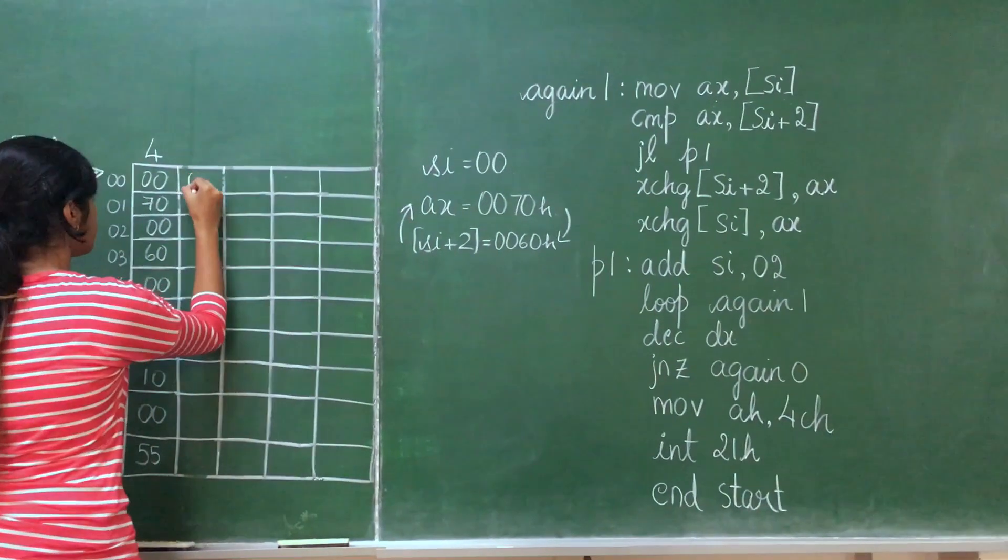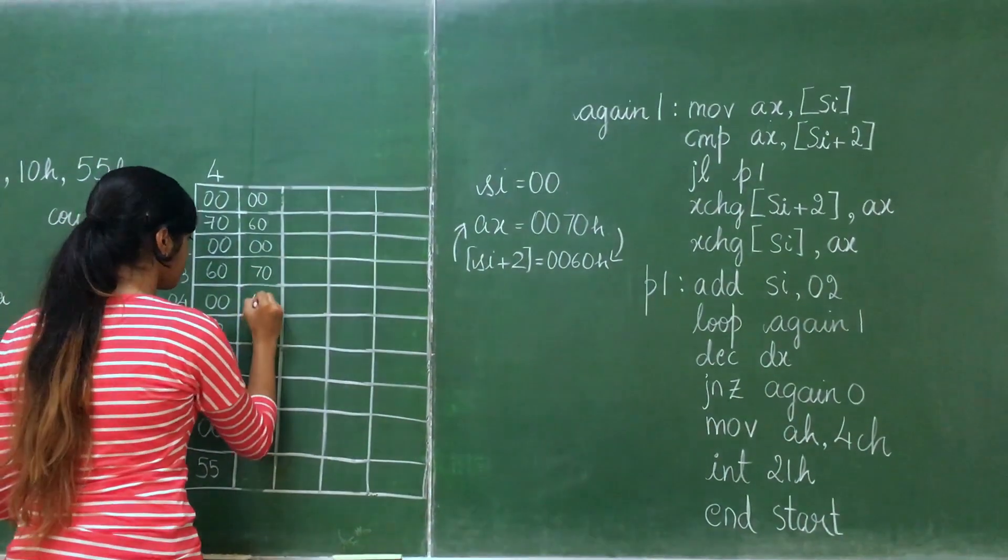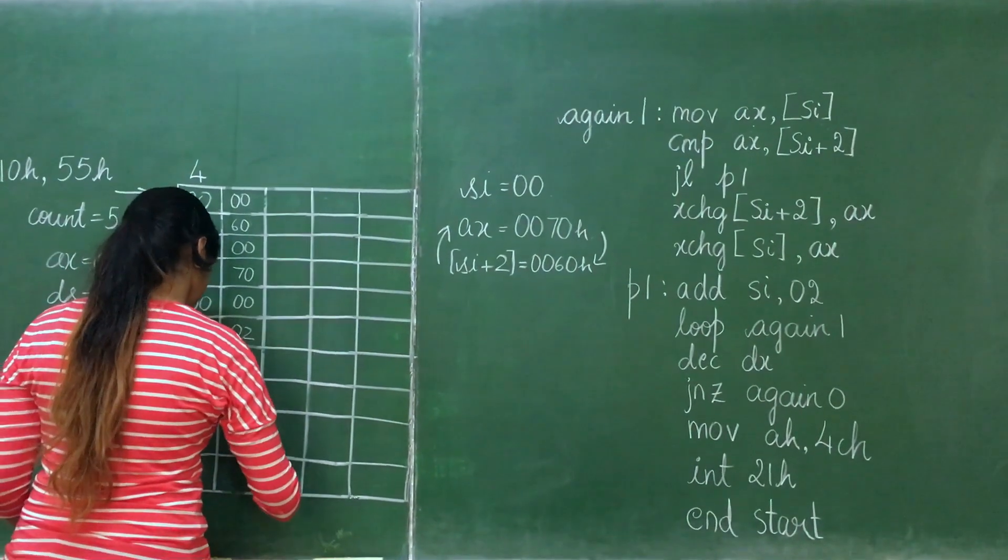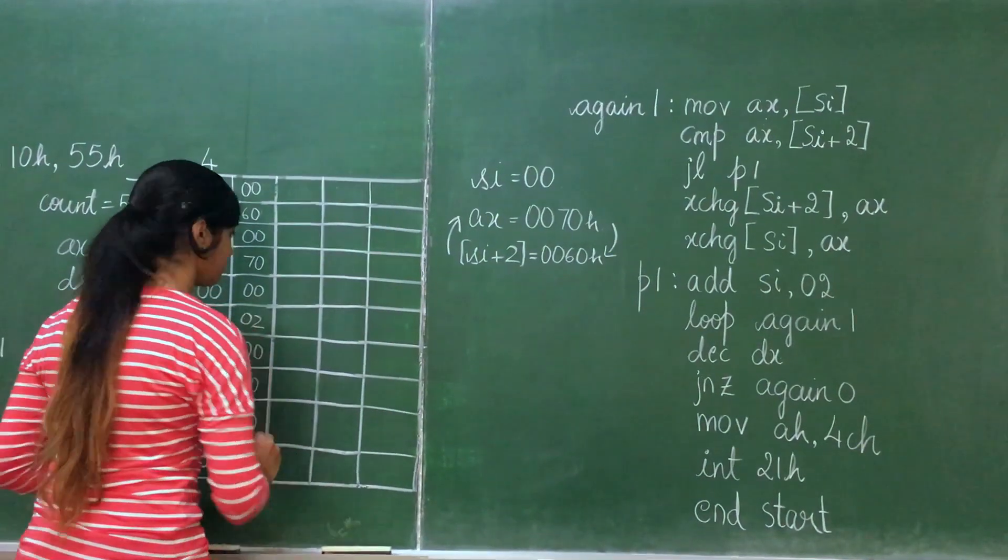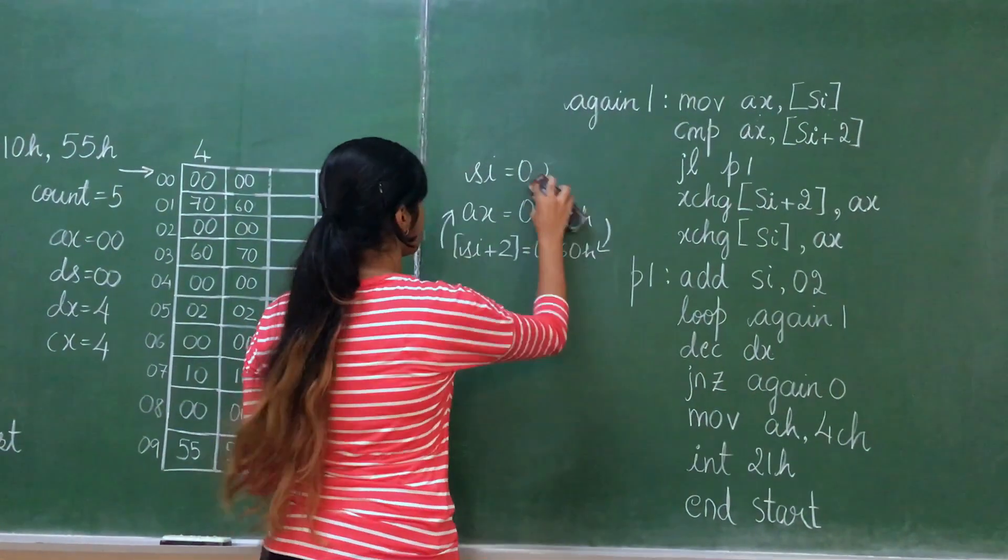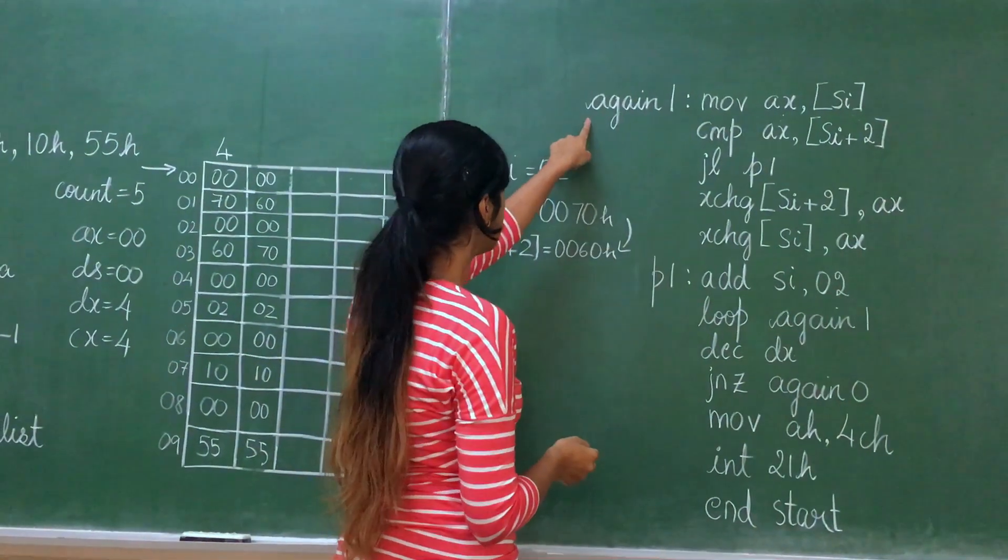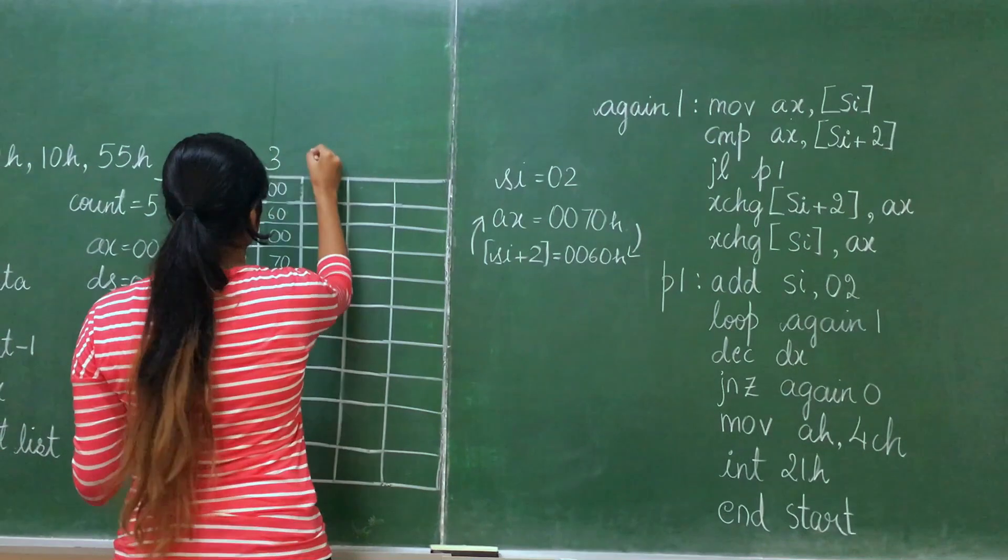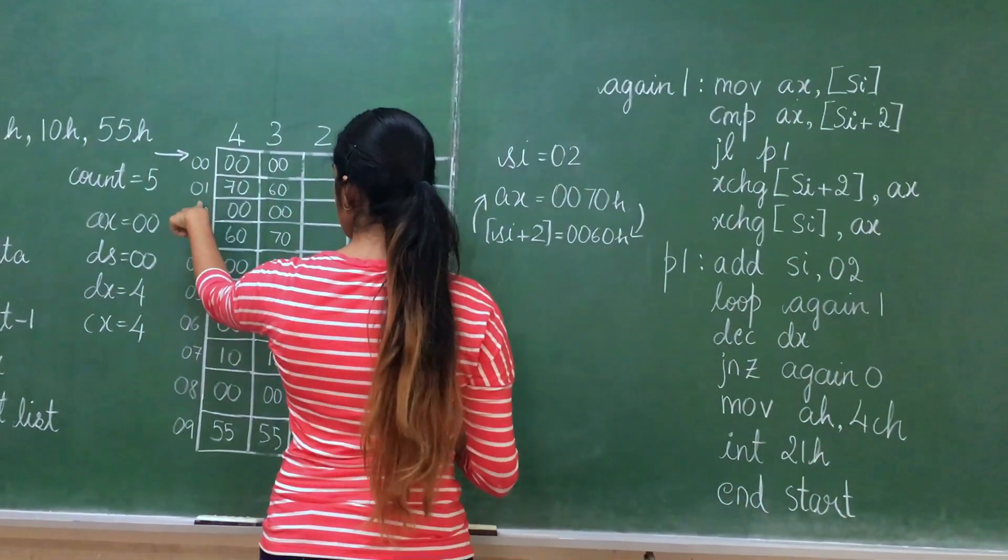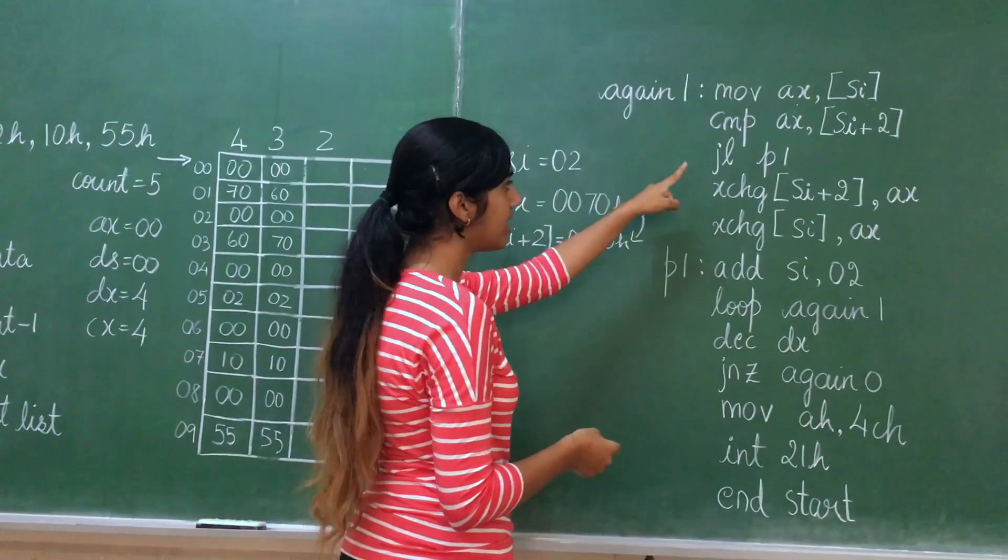On swapping, the values are stored. After the values are swapped, in P1, SI is incremented by 2, so the value of SI will be 02. And loop Again1, so the count will be decremented. In Again1, the value in SI, that is 02, is moved to AX. In 02 we have 0070, so AX will be 0070. And we compare AX with SI plus 2. SI plus 2, that is 02 plus 2 is 04. We have 0002.